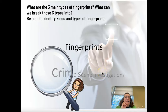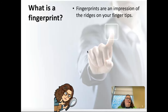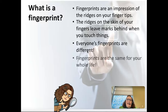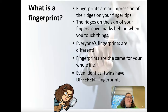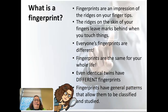Today we're talking about fingerprints. By the time we're done, you should be able to name the three main types of fingerprints and break those types down further into specific kinds. Fingerprints are an impression of the ridges on your fingertips — these ridges leave marks on things as you touch them. Everybody's fingerprints are different and stay the same for your whole life, just getting a little bigger as you age. Even identical twins have different fingerprints, and fingerprints have general patterns that allow them to be classified and studied.